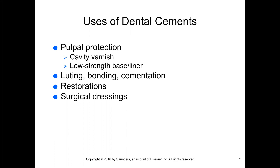Cements can be used for many things. Pulpal irritation can occur as the result of thermal conductivity, bacterial effects of caries, the biological response to chemicals contained in certain restorative material, and even cutting of the tooth structure. This happens when the layer of dentin remaining over the pulp is too thin to withstand compressive, tensile, and shearing stresses. Cavity varnishes, liners, and bases act as a protective layer between the dentin and the restorative material.